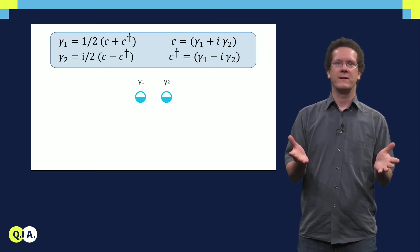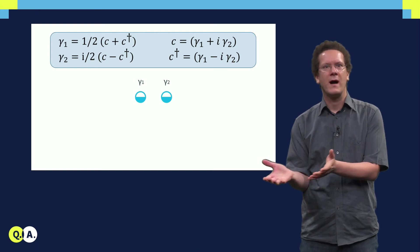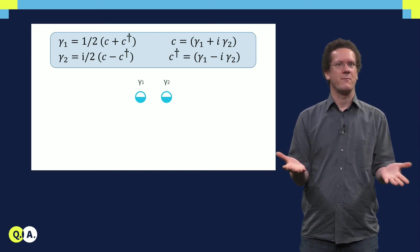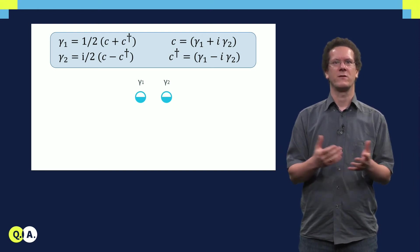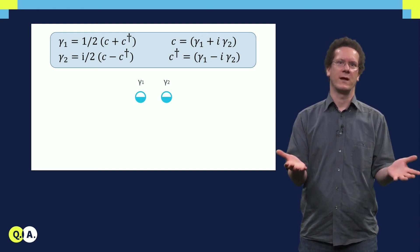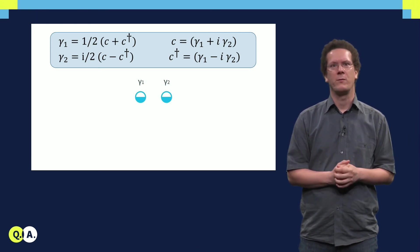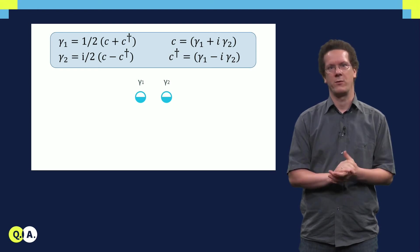Graphically, you can see that these states are at the same time occupied and unoccupied. Of course, this was just a mathematical trick, a transformation to go from one basis to another. What you see here is that, still, one ordinary fermion operator can always be described by two Majorana operators.